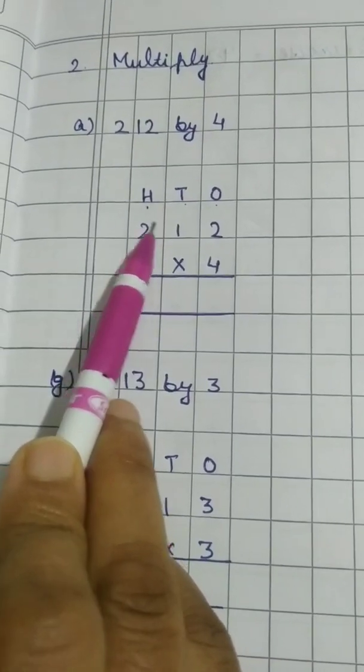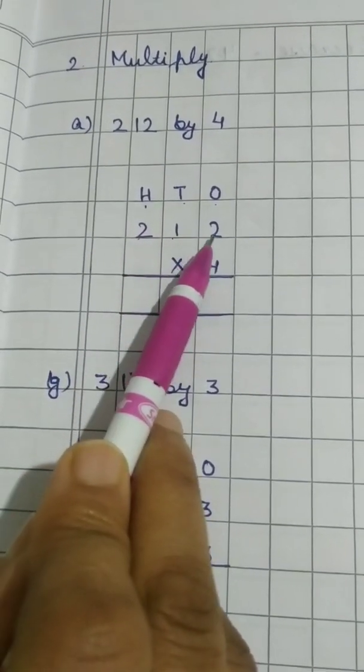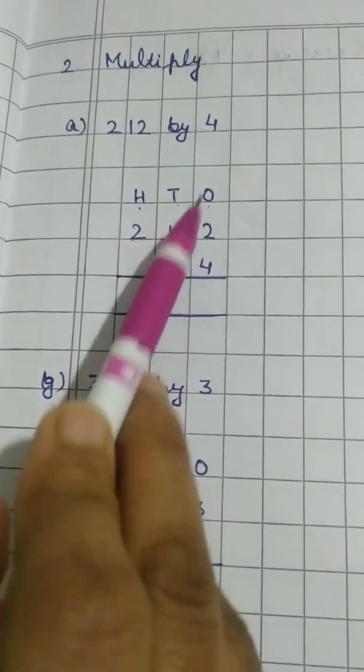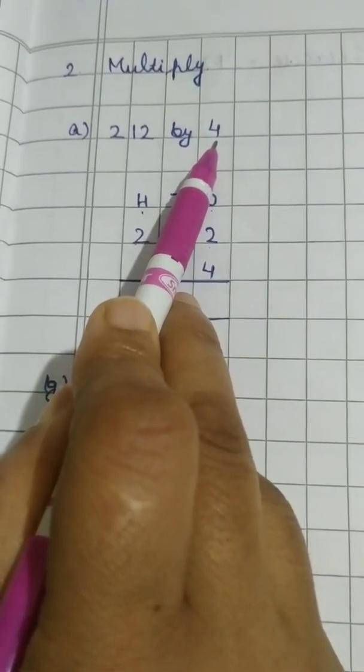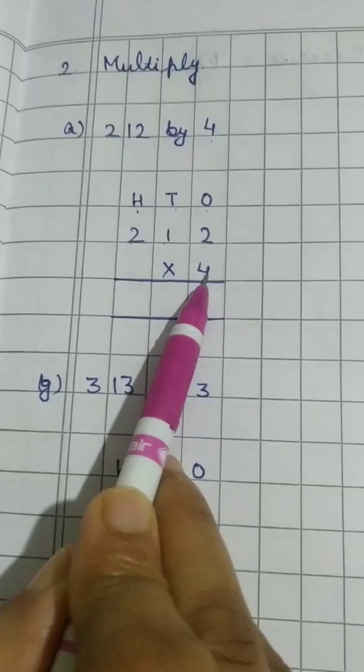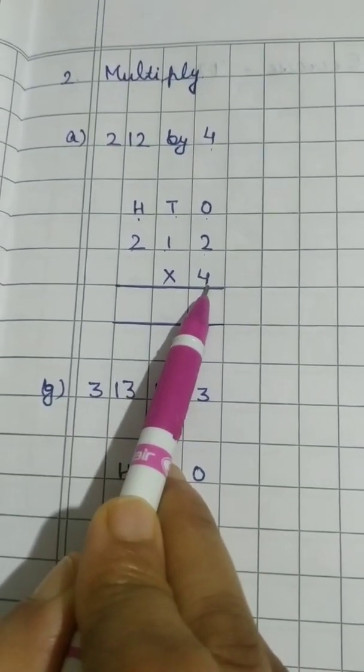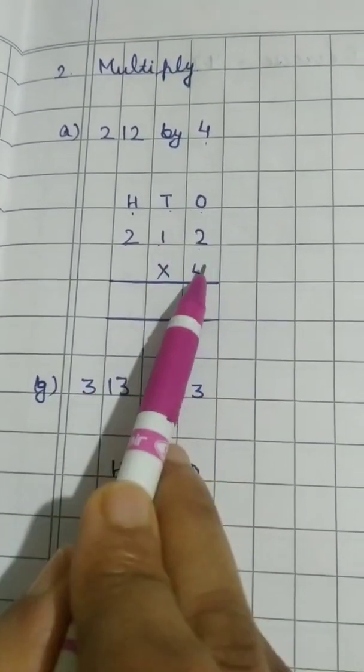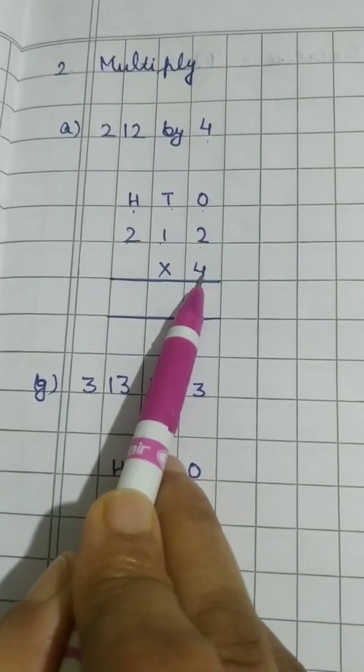Here the number is 212. So write accordingly. 2 at 100's place, 1 at 10's place and 2 at 1's place. Now we have to multiply it with 4. So we will write it on 1's place. Why? Because it is single digit number. It is 1's place only. So we will write it in the 1's column. Now let us multiply.